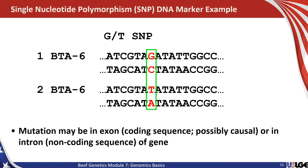This mutation or change in coding sequence may be in the exon or the coding sequence for a gene. Chromosomes are divided up into exons and introns — exons being the coding sequence and introns being the space in between genes, typically thought of as non-coding. Mutations can occur in either location. If they're in an exon, they may be causal of a change in the formation of a protein or enzyme that results in a difference in phenotype. But sometimes changes in the exon are silent and result in no change in the phenotype or protein structure.